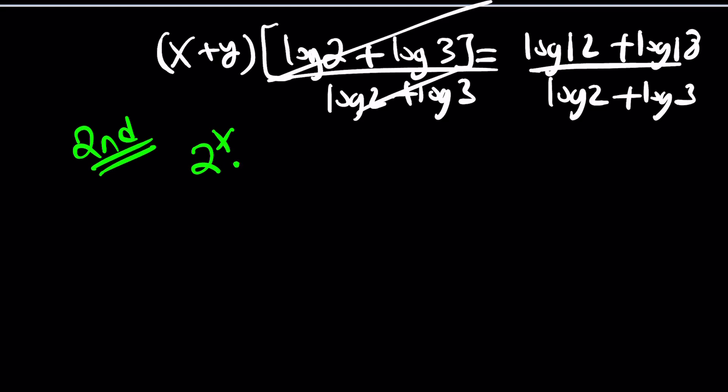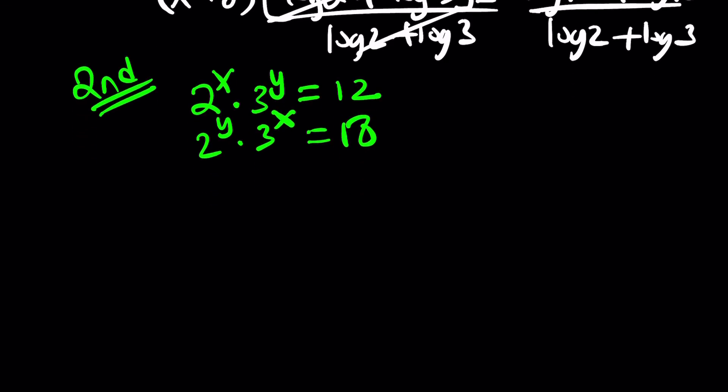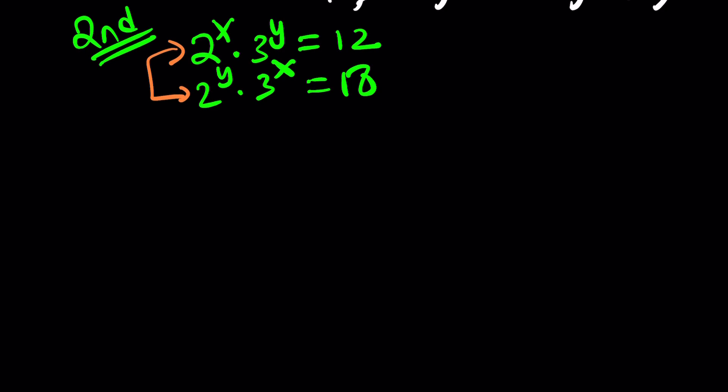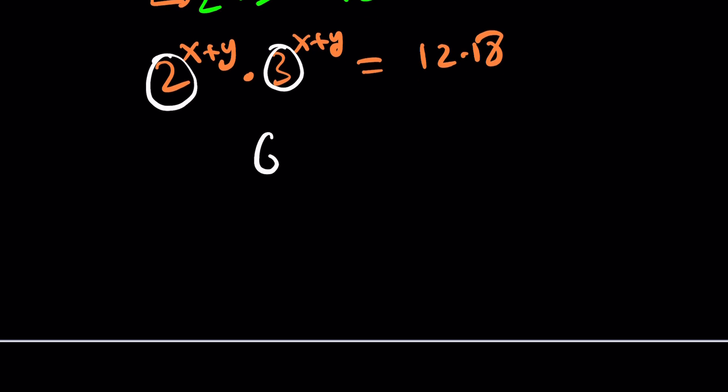Let's rewrite the system. 2 to the x, 3 to the y is 12, and 2 to the y, 3 to the x is 18. Here's how it works. Why don't we just, instead of logging both sides, let's just multiply these equations. Because we can bring these together. When you multiply 2 to the power x and 2 to the y, you get 2 to the power x plus y. Same thing with the 3. You get x plus y and 12 times 18. This is really cool. You know why? Because they have a common exponent. So that means we can multiply the bases, which gives us 6 to the power x plus y.